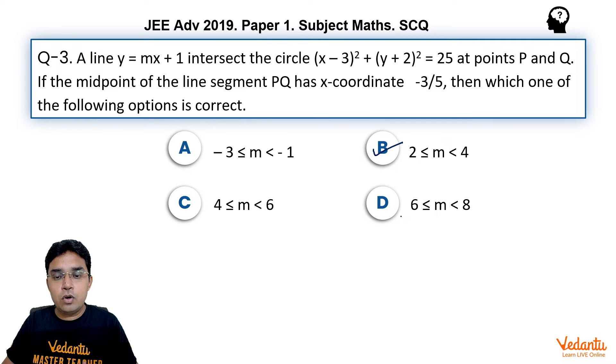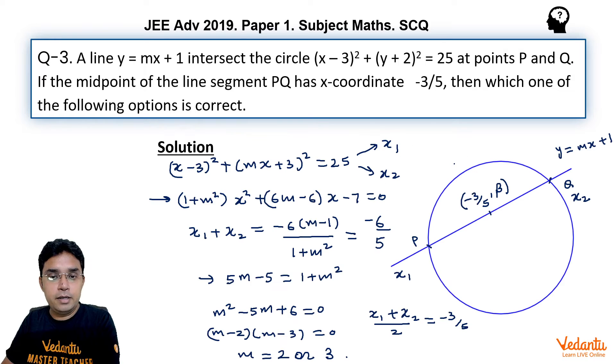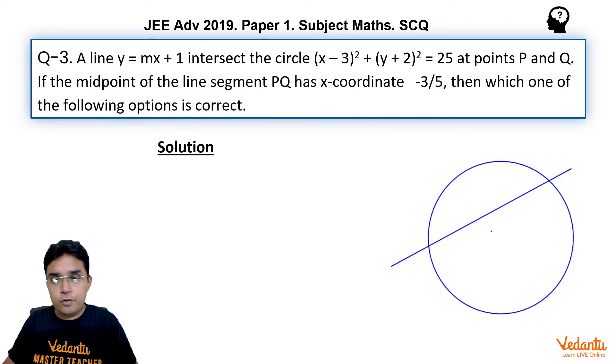A is wrong, C is wrong, D is wrong, B is correct. So only correct option is B. That is one method. I will tell you one more method for this question.